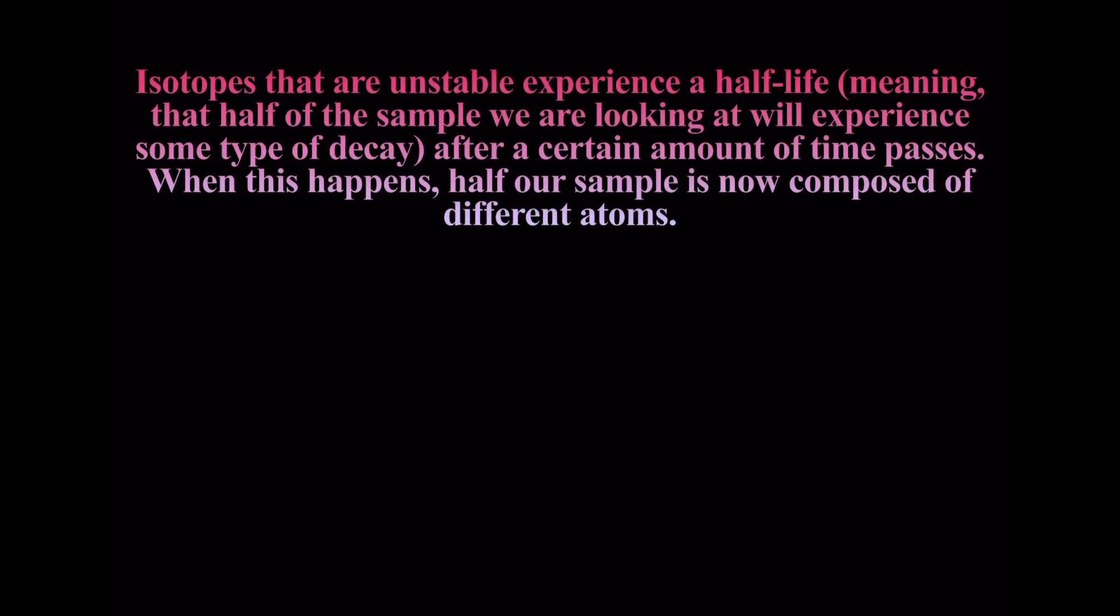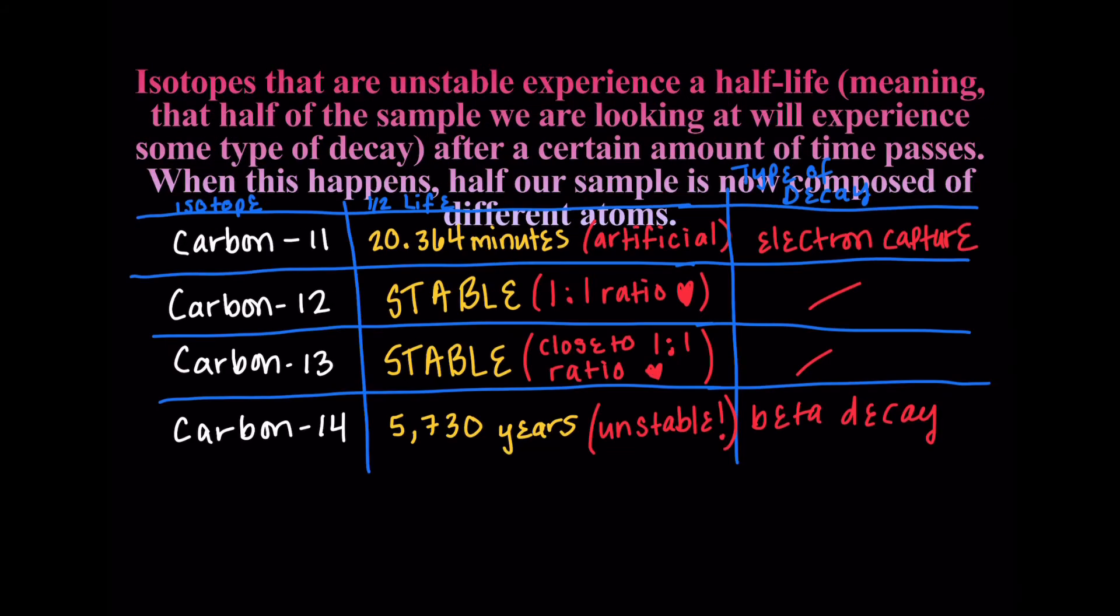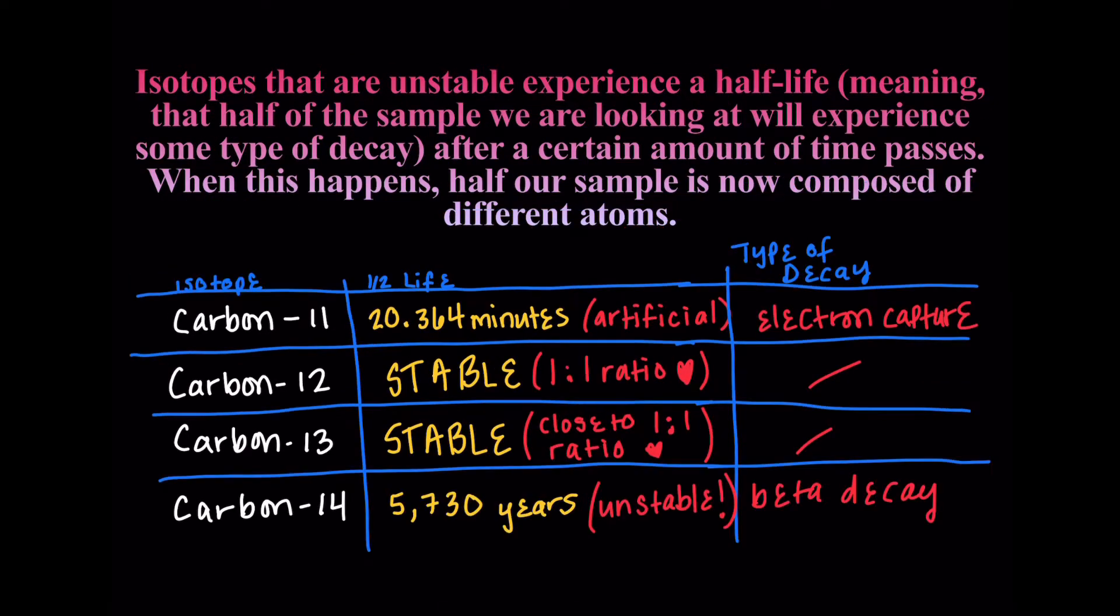So isotopes that are unstable experience something called a half-life, which means that half the sample that we have is going to experience some kind of decay after some time passes and it's going to decay into some different kind of atom.